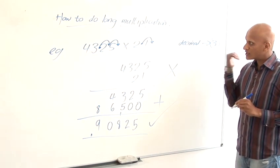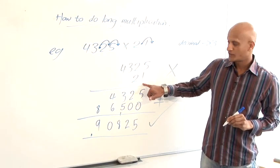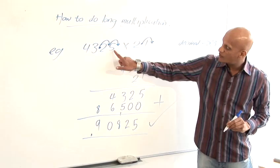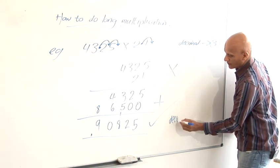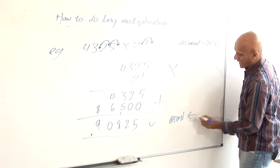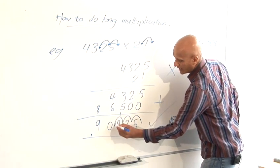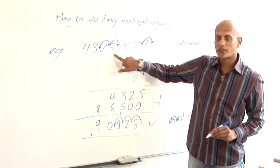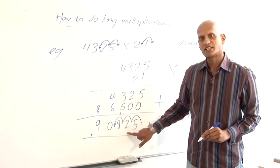So I've moved the decimal to the right by 3 places to make it 4, 3, 2, 5 times 21. And so when I get my answer at the end to put it back to make the decimal back where it should be I'm going to do the opposite. I'm going to shift the decimal back to the left by 3 places. So from here 1, 2, 3 to there. And so the answer for 43.25 times 2.1 would be 90.825.